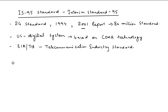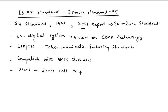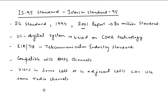Like IS-136, IS95 is also backward compatible with the AMPS channel or frequency band. AMPS channels are dedicated channels for the first generation, meant for analog communication. Due to this, mobile stations and base stations can be economically produced for dual-mode operations. IS95 also allows users in the same cell and in adjacent cells to use the same set of frequencies or radio channels.